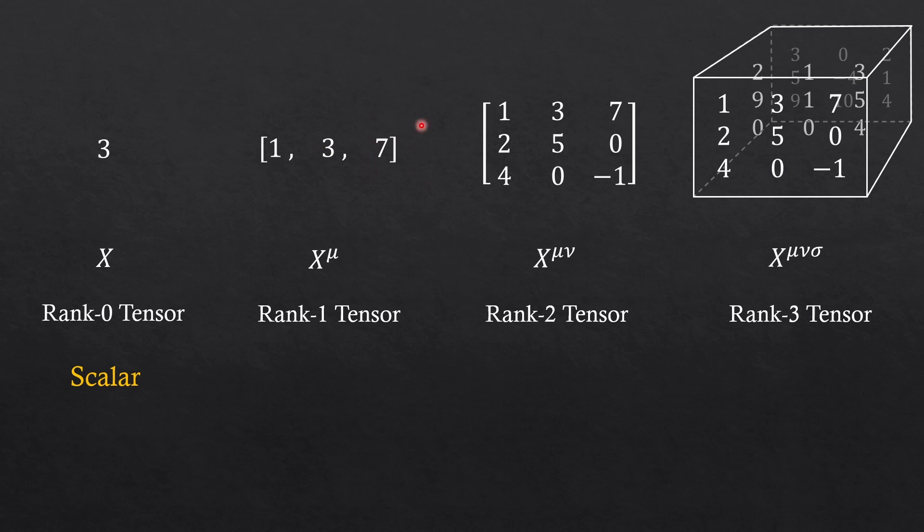This is an array of numbers. So we now need an index mu to indicate which element we are talking about. And this was rank one tensor. Rank one tensor is also called a vector. Here we have a row and a column. So we need two indices mu and nu to describe all the elements. And this was a rank two tensor. And we also call it a matrix.